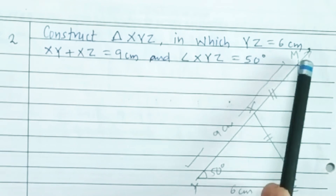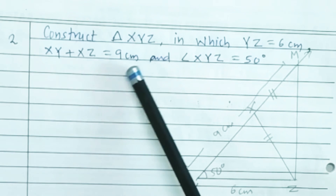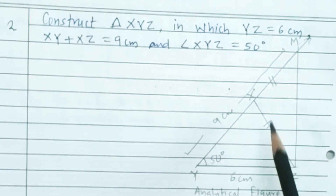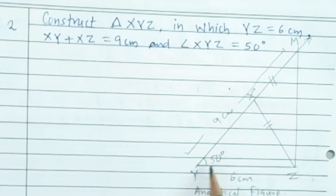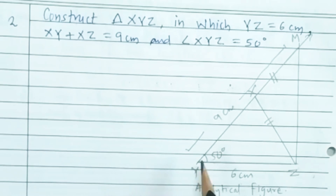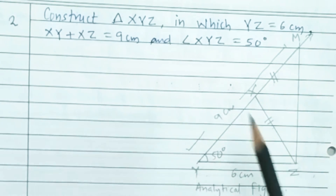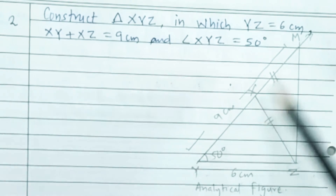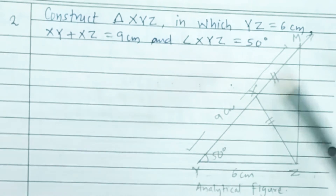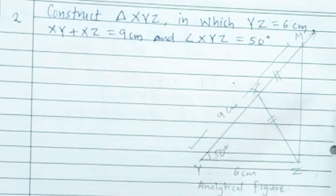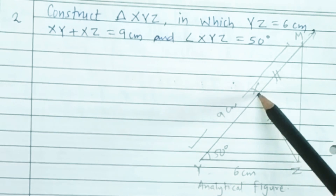Next example: Construct triangle XYZ in which YZ is equal to 6 cm, XY plus XZ is equal to 9 cm, and angle XYZ is equal to 50 degrees. This is the rough analytical figure. In triangle XYZ, first draw segment YZ of 6 cm, then make angle XYZ of 50 degrees. Since XY plus XZ equals 9 cm, from Y take point M at a distance of 9 cm on the angle ray. Then join MZ and draw the perpendicular bisector — the perpendicular bisector will intersect YM, and that intersection point will be point X.